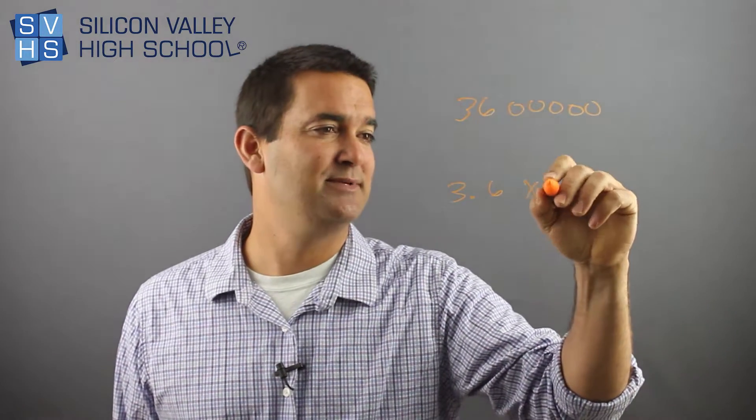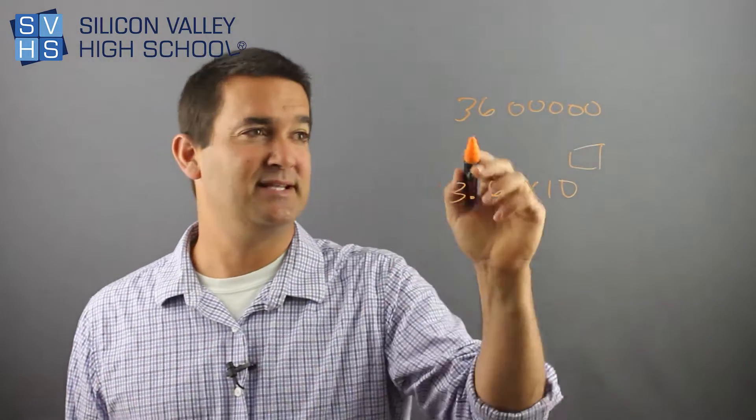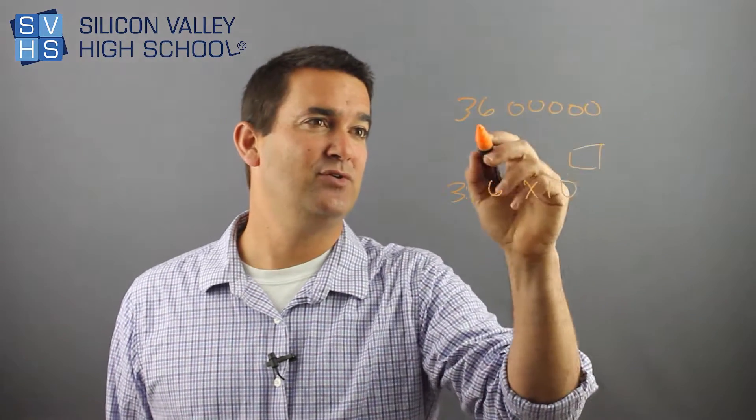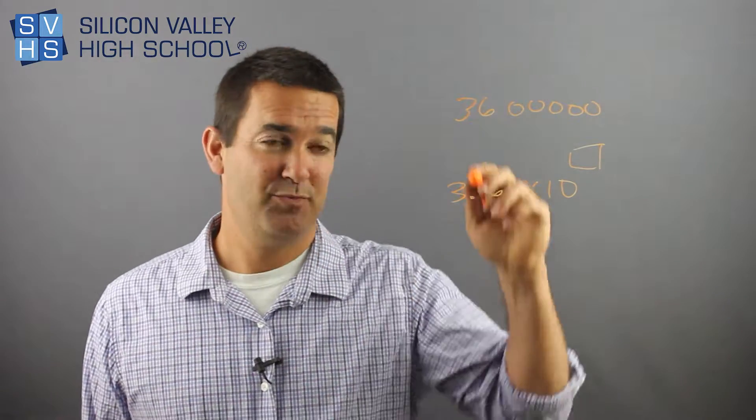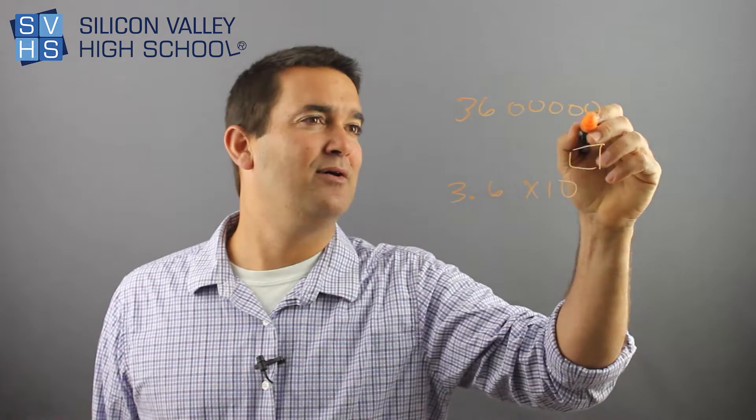Now, without thinking, you write times 10 to the. Now, this is empty. Now, looking up, is this a huge number or a tiny number? Because it's huge, this is a positive exponent. And now, what is that exponent? Here's what you do. You put your little pen, your little orange pen, where the decimal is now.